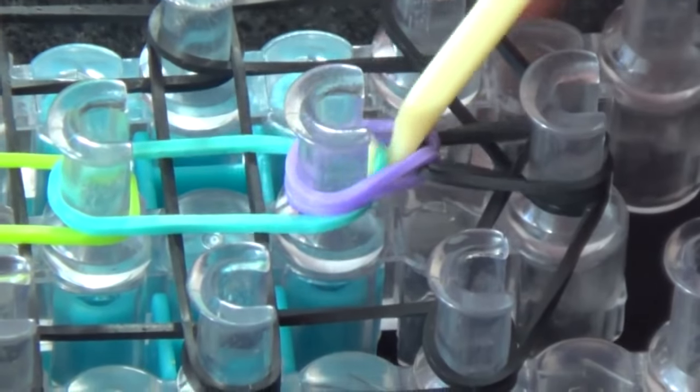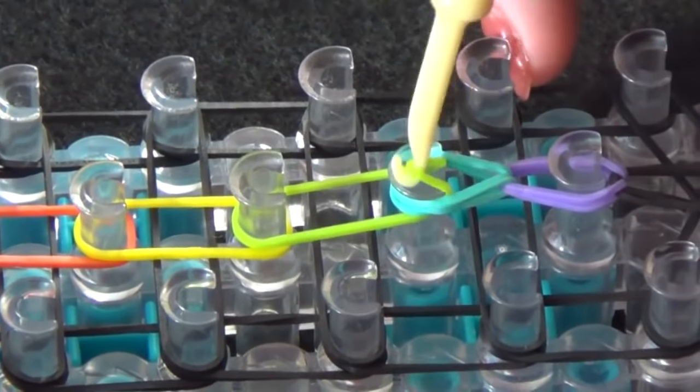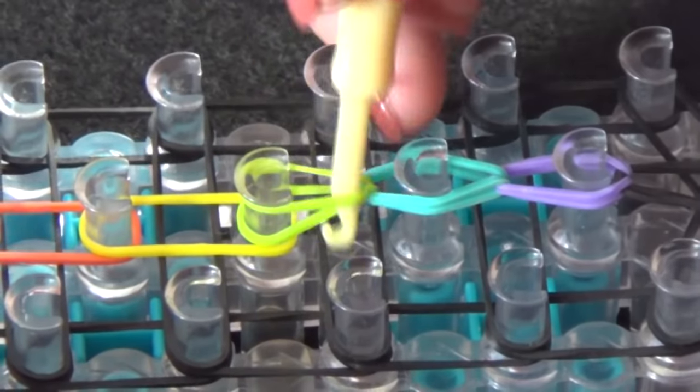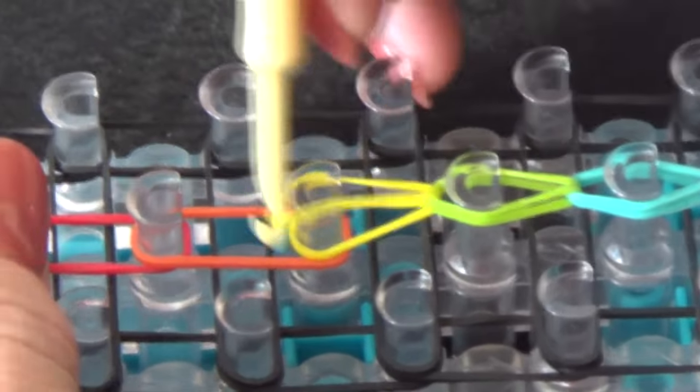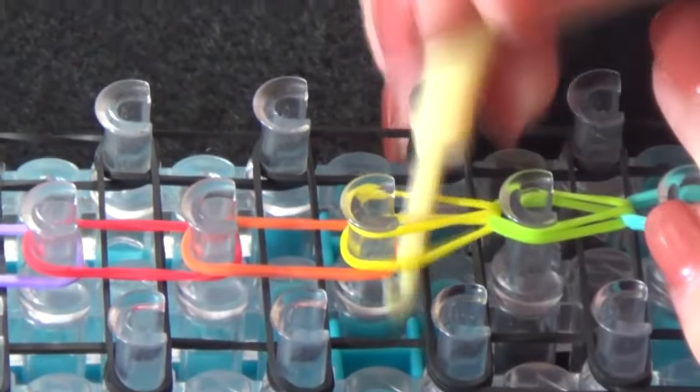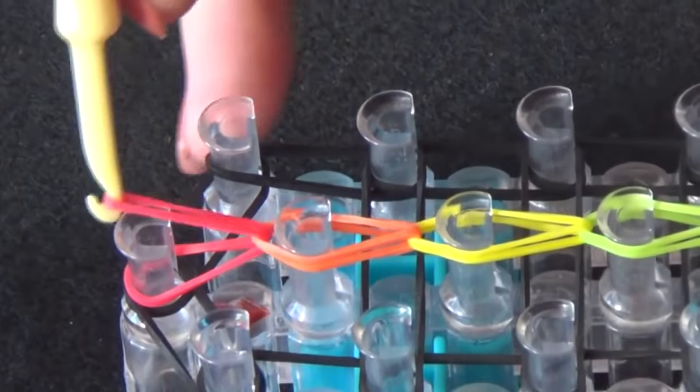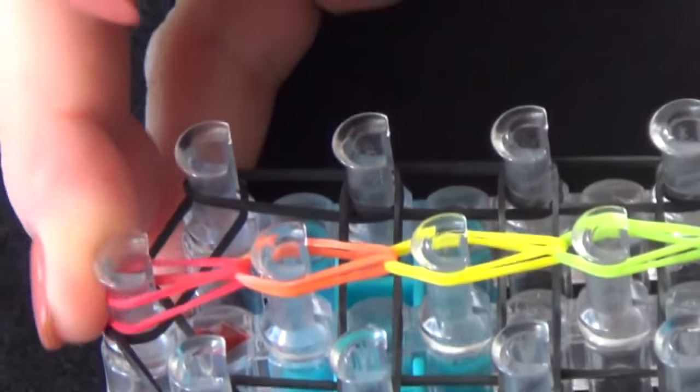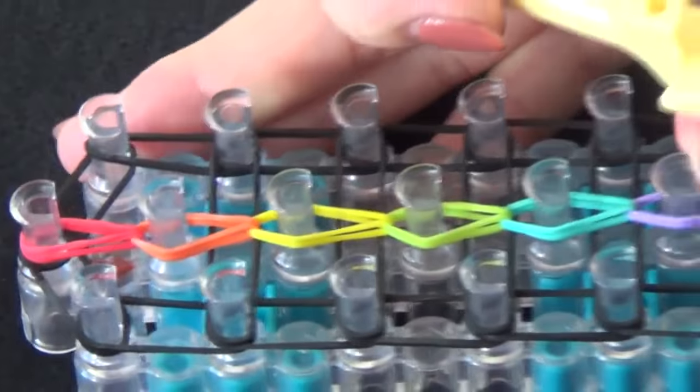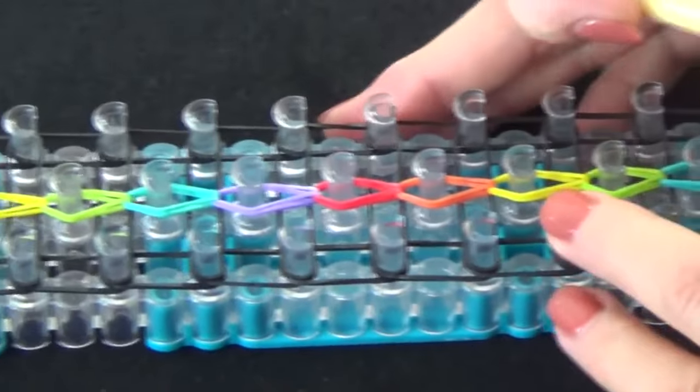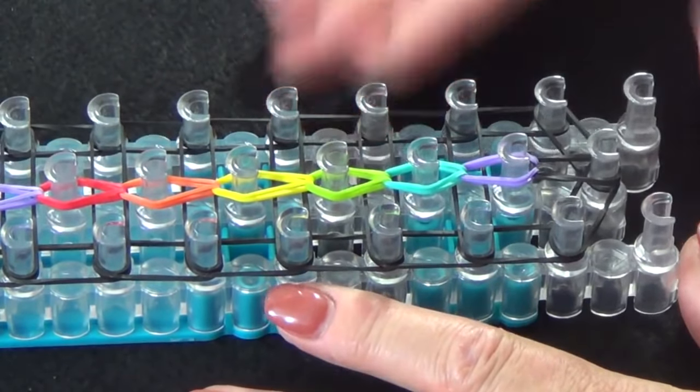Then we'll continue looping the center row of colorful bands, and we'll fast forward from here. Once you've finished looping the center row of bands,